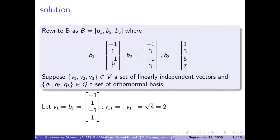We write our B1 vector, B2 vector, and B3 vector. We now suppose another set of vectors V1, V2, V3 belonging to the B space, which are a set of linearly independent vectors. And our Q1, Q2, Q3, belonging to the Q matrix, are also a set of orthonormal bases.